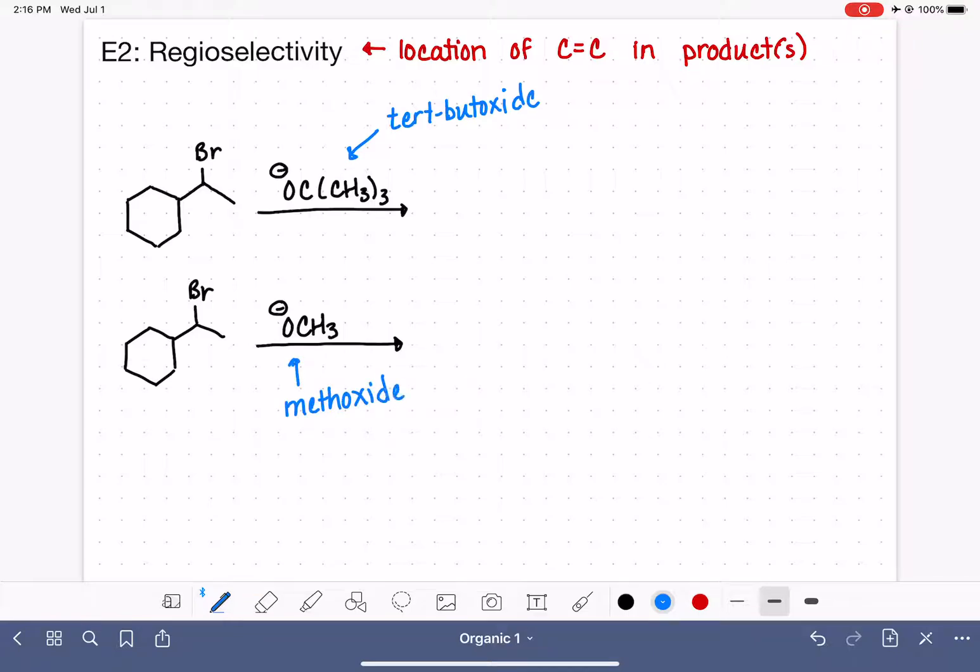These are both very common bases that are used in the E2 reaction. Methoxide is a lot of times abbreviated OME, where ME is the abbreviation for the methyl group. Tert-butoxide can sometimes be abbreviated T-O-B-U.